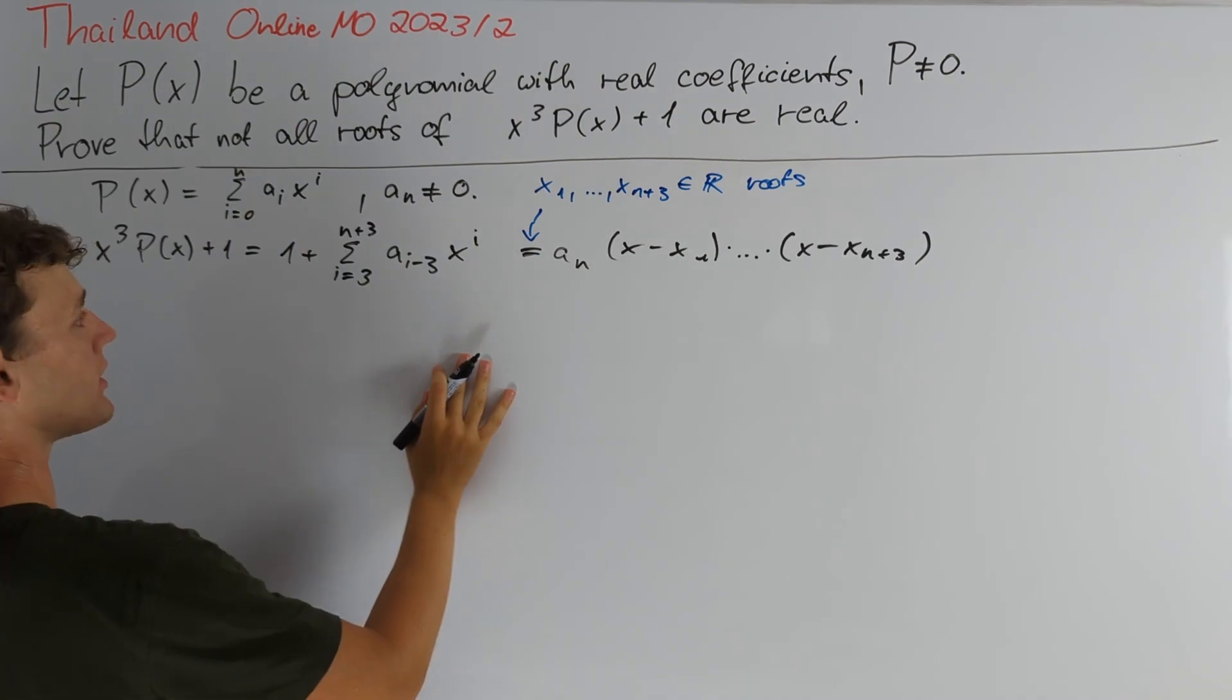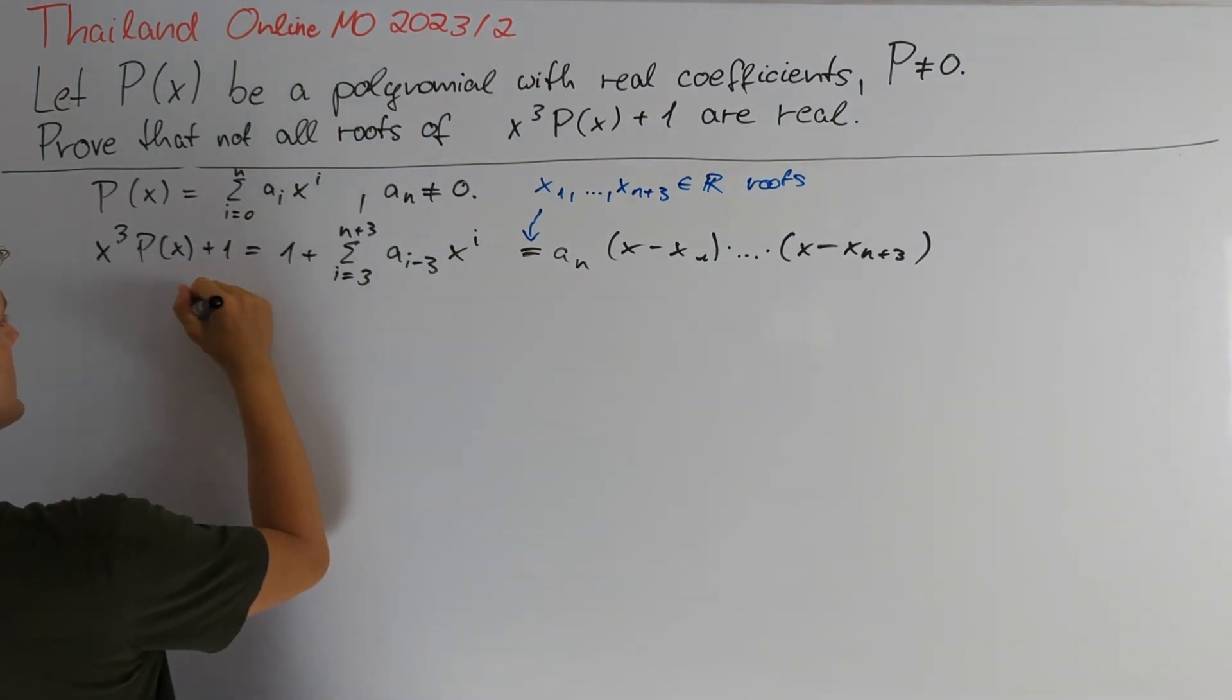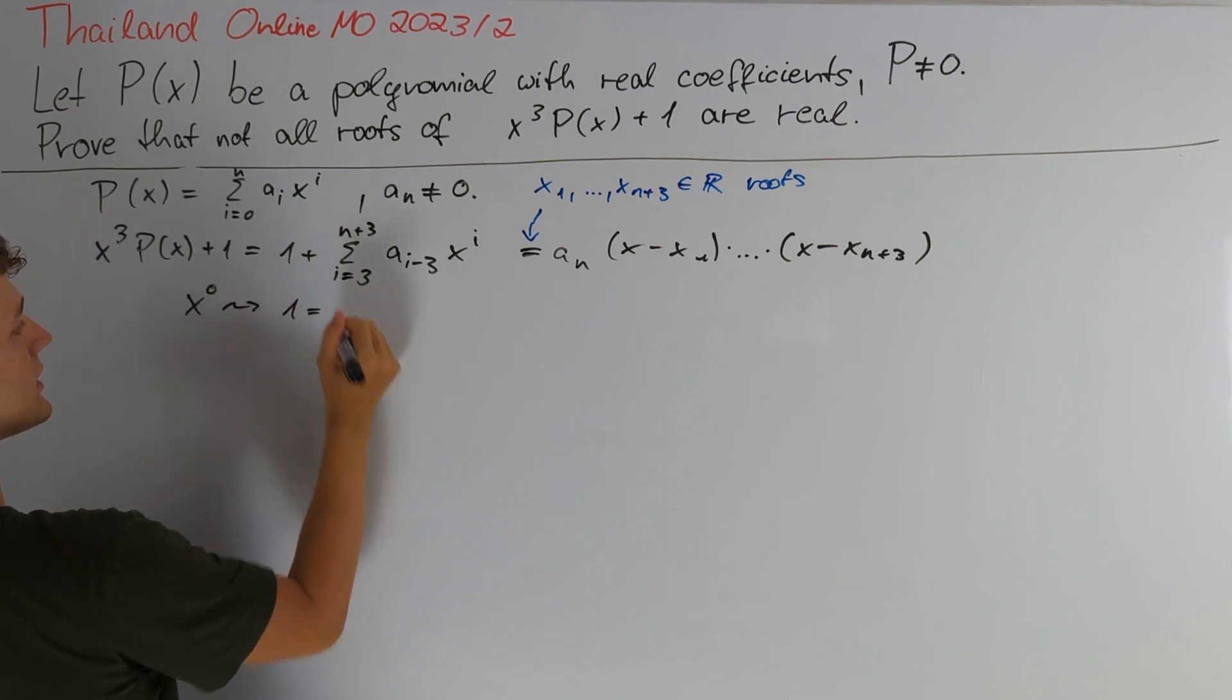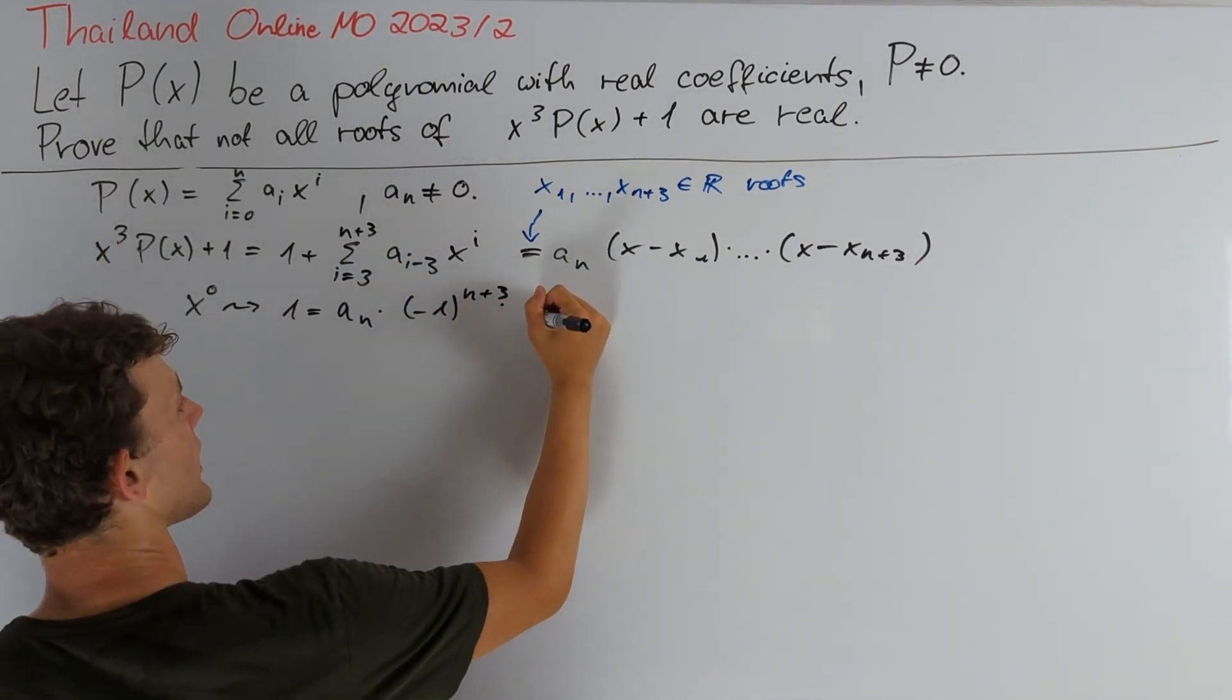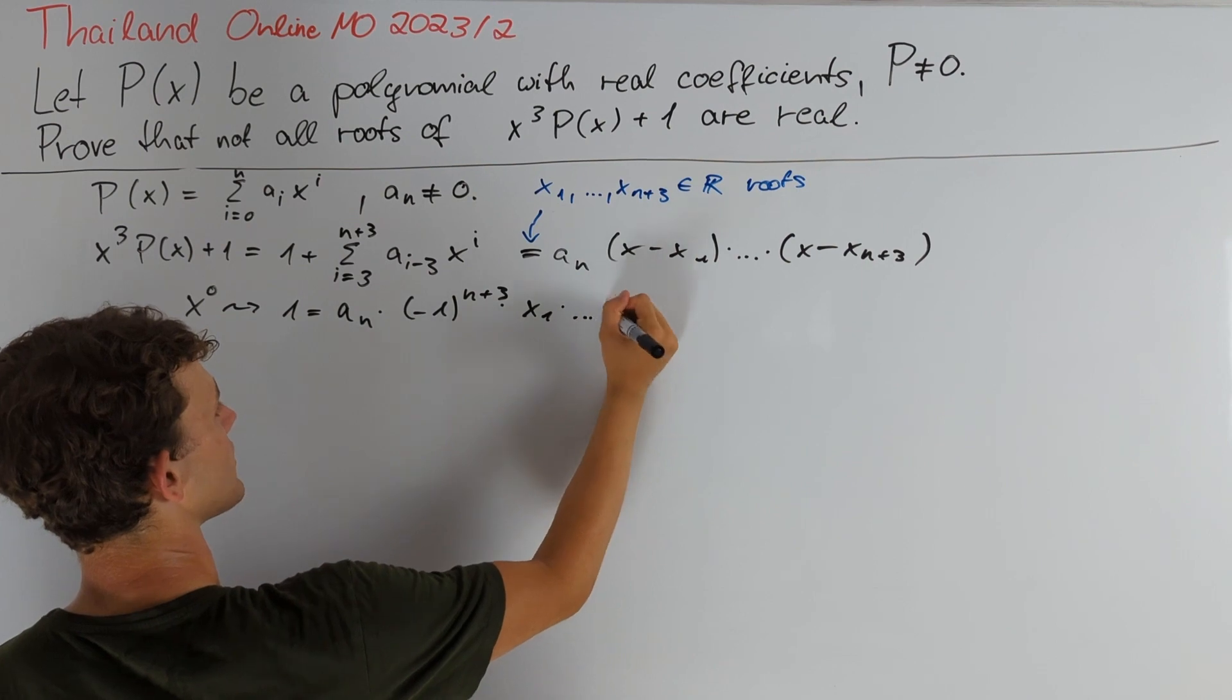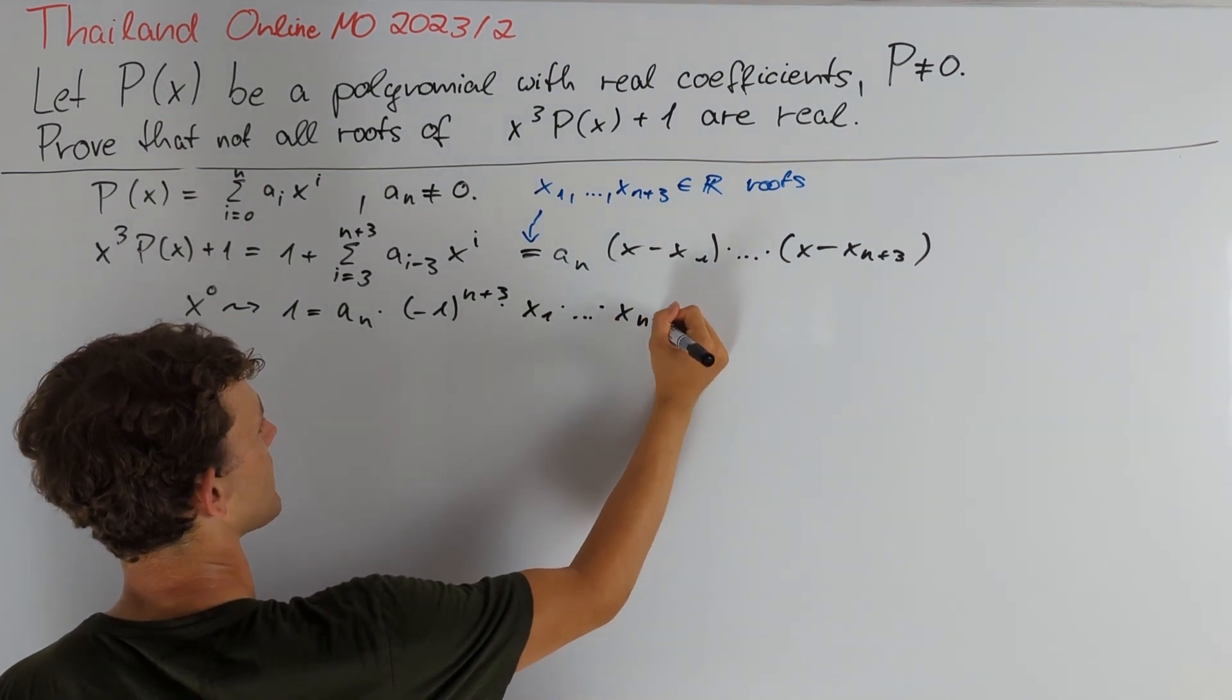In particular, comparing the coefficient of x to the power of 0, we get that 1 is equal to aₙ times (-1) to the power of n+3 times the product x₁ times and so on times xₙ₊₃.